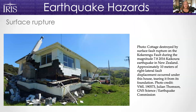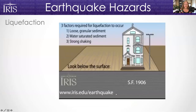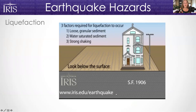Another earthquake hazard is surface rupture. Not every earthquake actually breaks the surface of the ground, but in this case it did, and it tore this cottage apart — this is an image from the Kaikoura earthquake in New Zealand. Liquefaction can be another earthquake hazard. For liquefaction to occur, you need loose sandy soil and a high water table. Earthquake waves push the water up towards the surface, which pushes all those little grains of sand apart and causes them to lose their ability to hold things up — it basically turns the ground into quicksand.